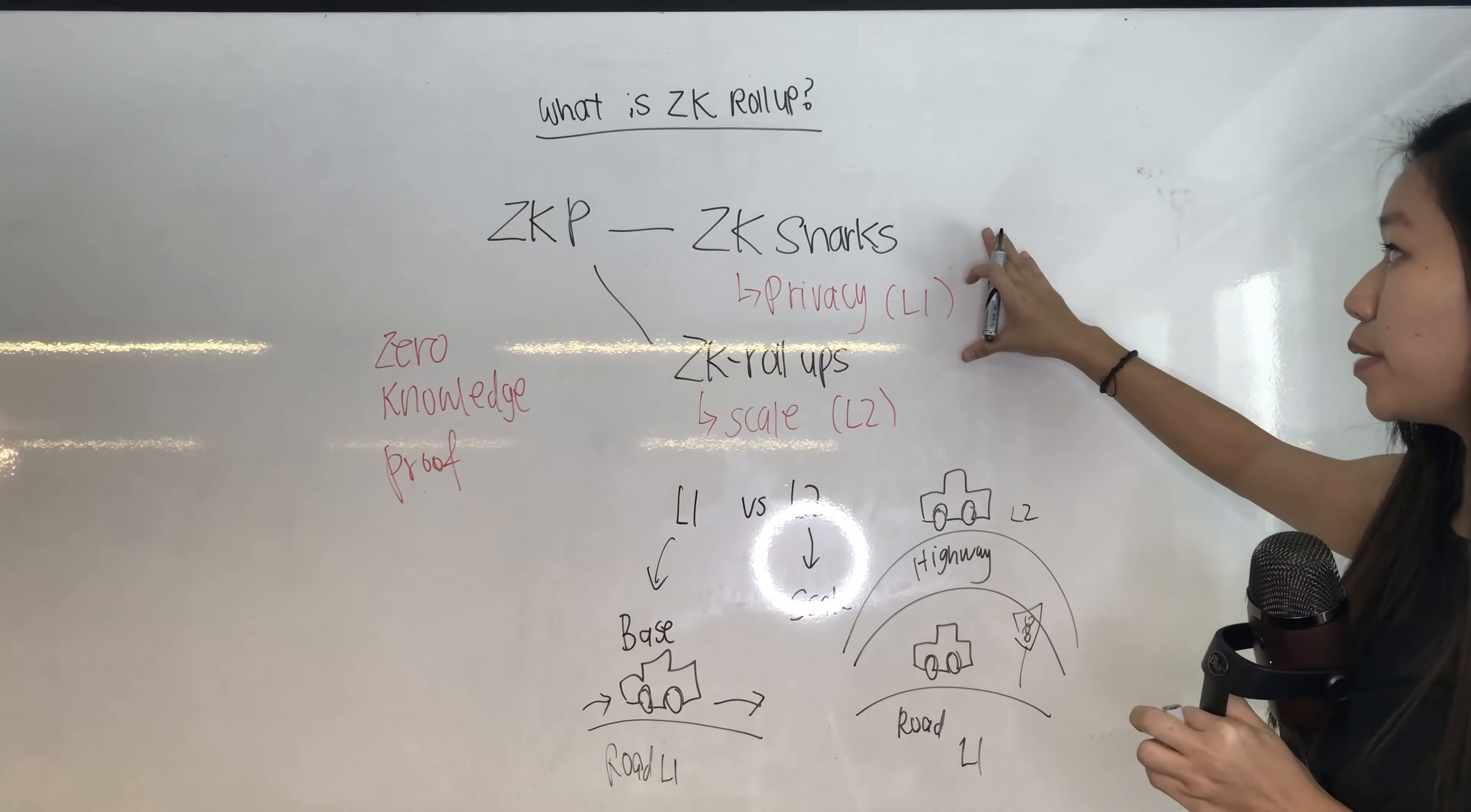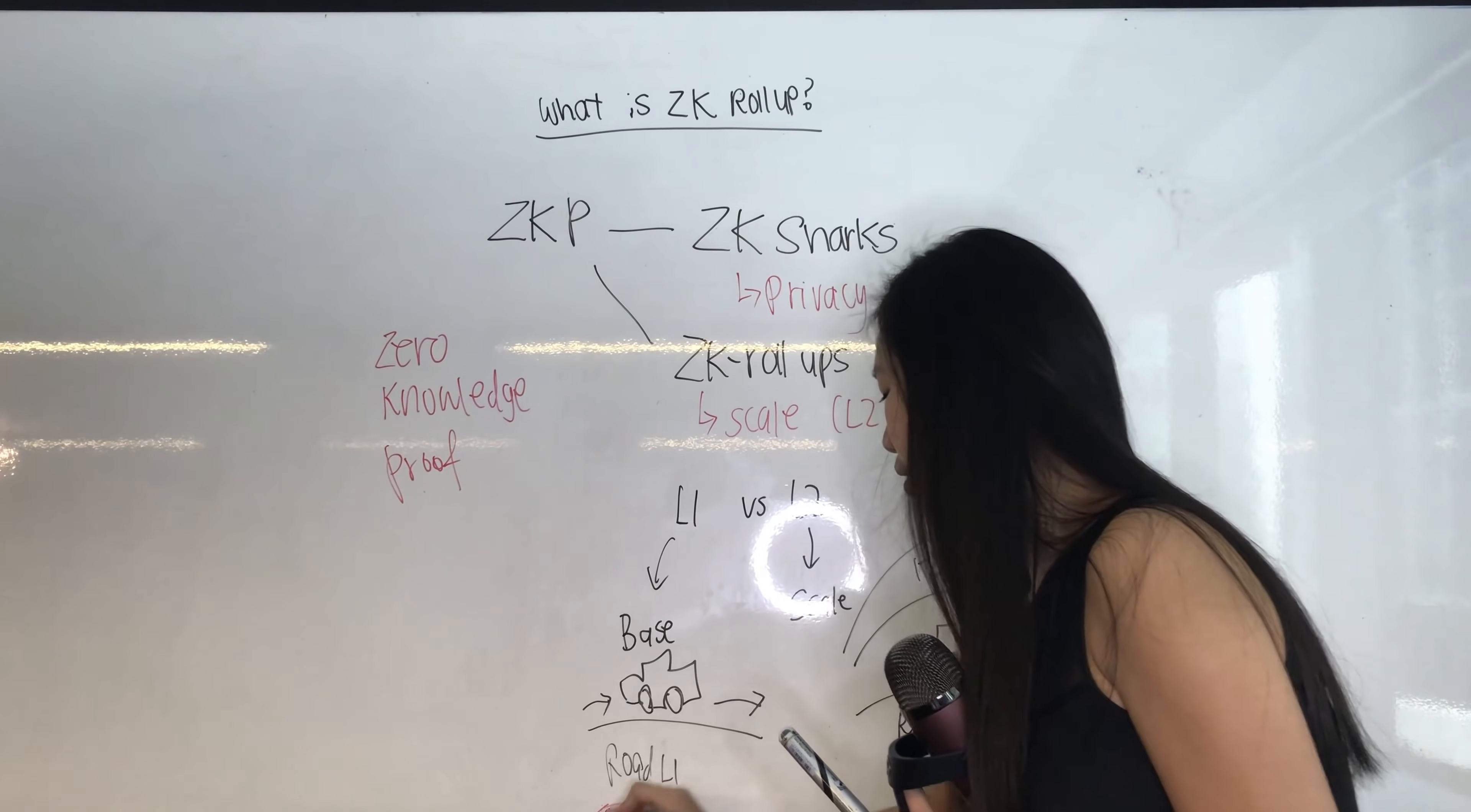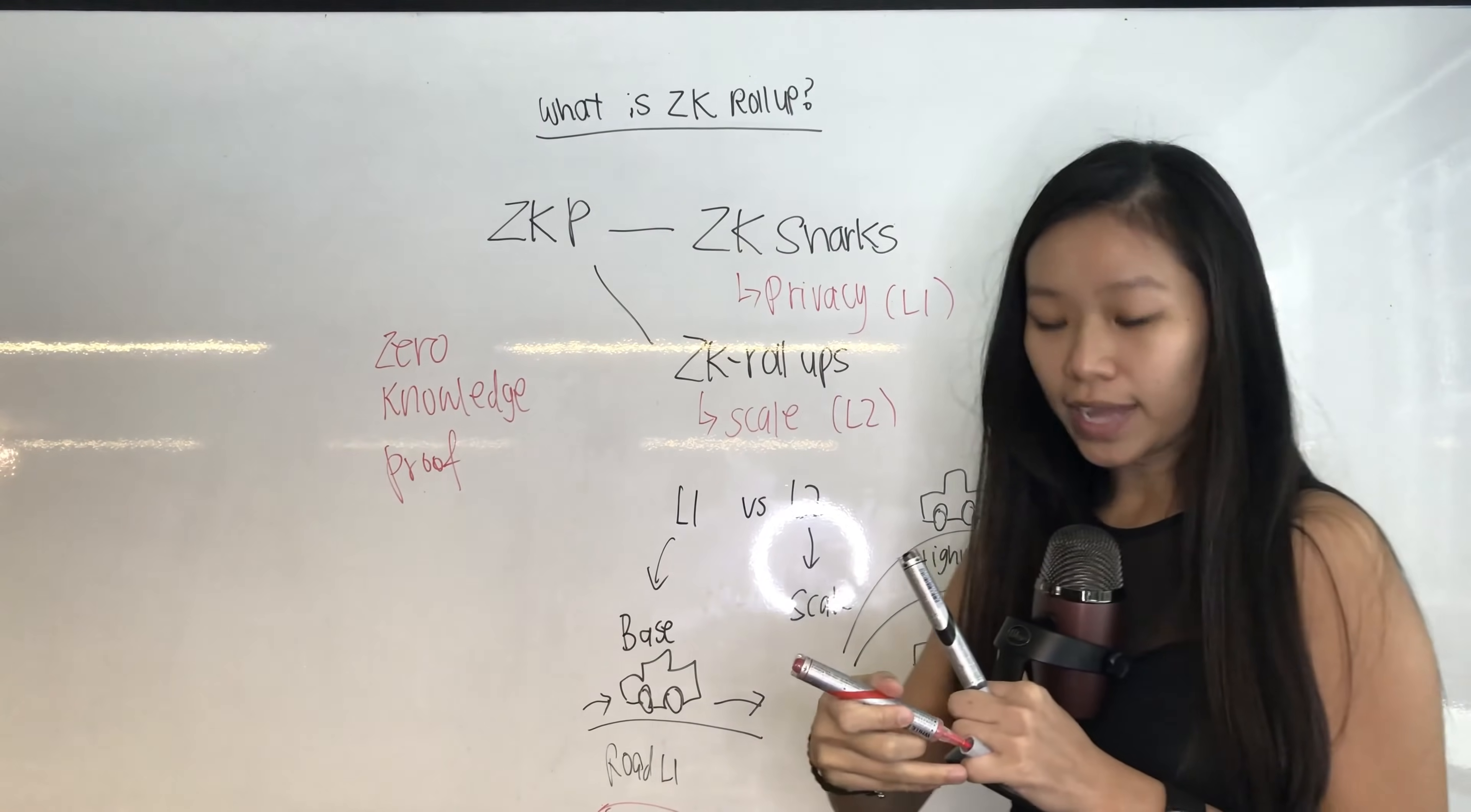It basically allows more cars to go over than just your regular roads because your regular roads could have stuff like traffic lights and stuff like that, so it's not very efficient. If you want scalability, we go to layer two for scalability. So in general, this is the difference between layer one and layer two. If you want to apply ZK Snarks and ZK Rollups, ZK Snarks is basically during this layer one road base layer, you have privacy in there. And where we have the highway, we have scalability, which is your ZK Rollups. So these are the two different applications of zero knowledge proof in layer one versus layer two solution.